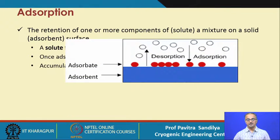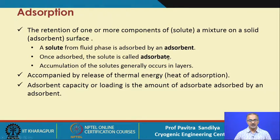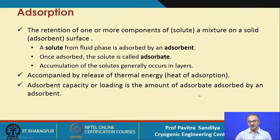Here is a pictorial representation of adsorption. We see there is a solid substrate in blue, the adsorbates are given by the red balls, and the white balls are the solutes. These solutes are coming and sitting on the adsorbent and are called adsorbate, and some of these adsorbates can again go back to the fluid phase — that we call desorption. Generally adsorption is accompanied by release of thermal energy, meaning there will be some heating when adsorption goes on; such processes are called exothermic processes. Adsorption is an exothermic process. Adsorbent capacity or vertical loading is the amount of adsorbate that gets adsorbed by unit mass of the adsorbent.